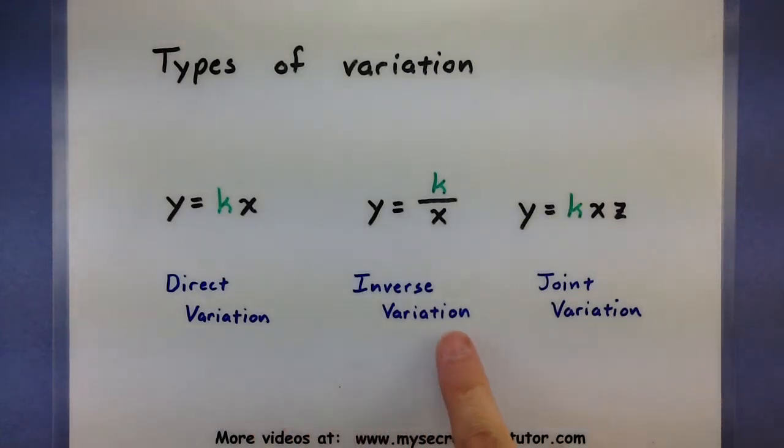So we'll cover direct variation, inverse variation, joint variation, and then near the end we'll also work with combined variation, which really mixes all these different types.